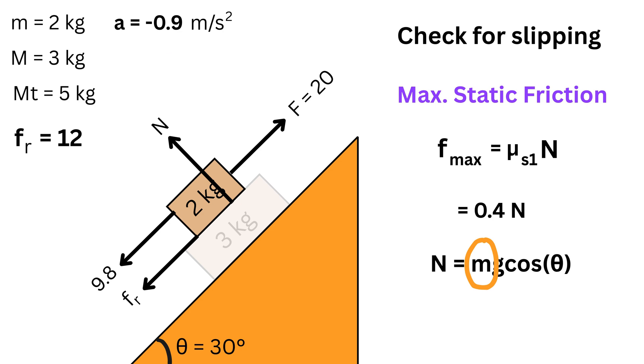Its weight only affects the normal force between itself and the inclined plane. Therefore, the normal force n is correctly found by taking the top block's mass m times gravity g times the cosine of 30 degrees. This gives us 16.97 newtons, which we then multiply by the static friction coefficient 0.4 to get the maximum possible friction f_max, which is approximately 6.79 newtons.